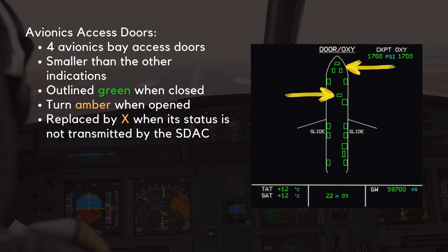There are four avionics bay access doors, and they are all displayed on the doors SD page. They are smaller than the other door indications to distinguish themselves, and all follow the same principles as the cargo doors. The avionics doors are outlined green when closed and turn amber when opened. The symbol is replaced by one amber cross when its status is not transmitted by the S-Stack.